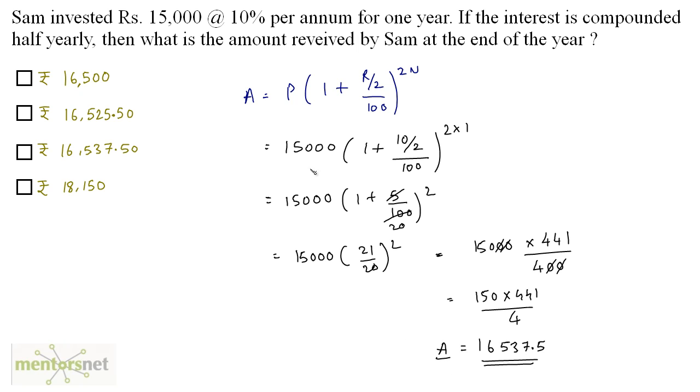So Rs. 16,537.50 is the amount that Sam will receive at the end of the year. The answer is option C.